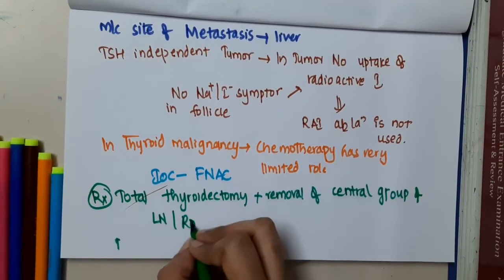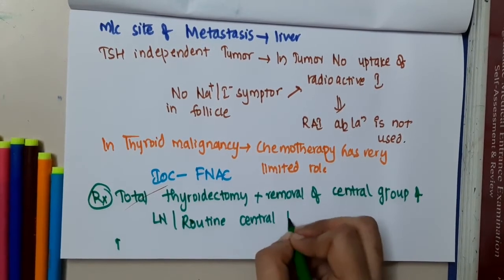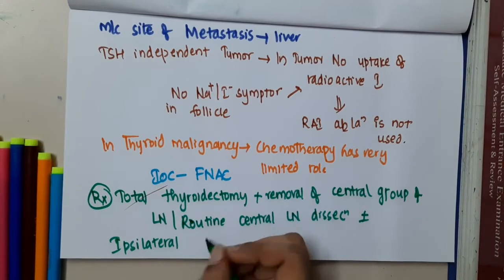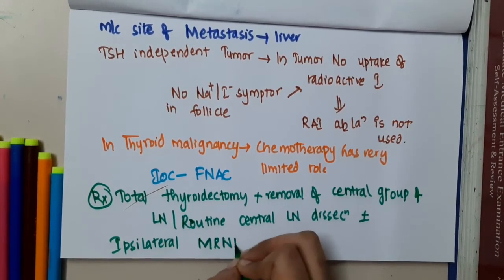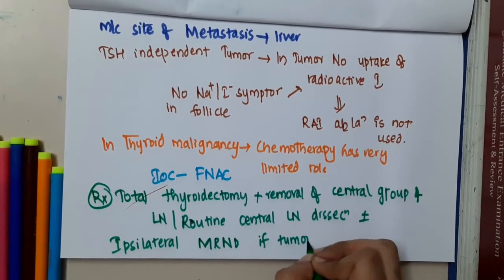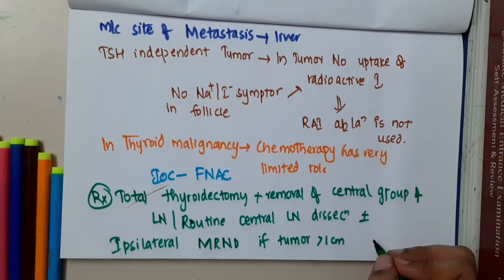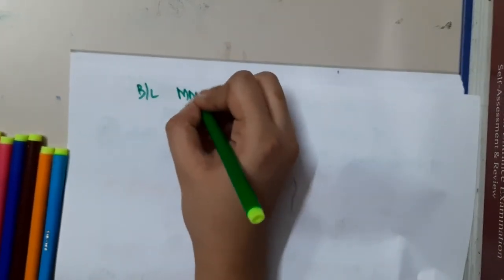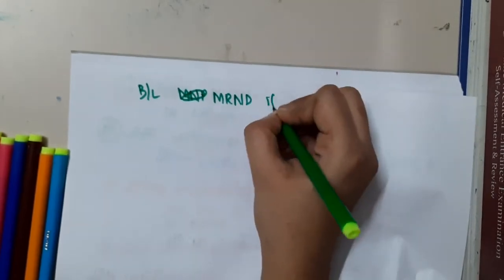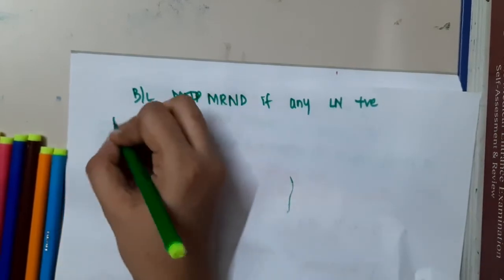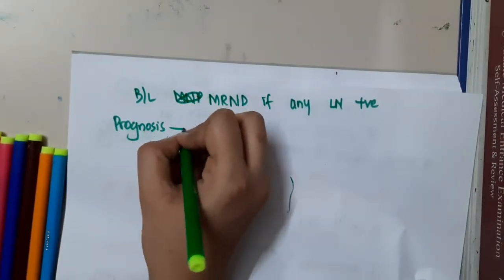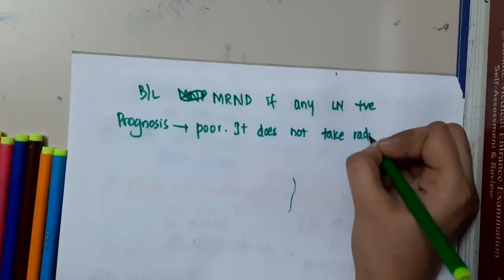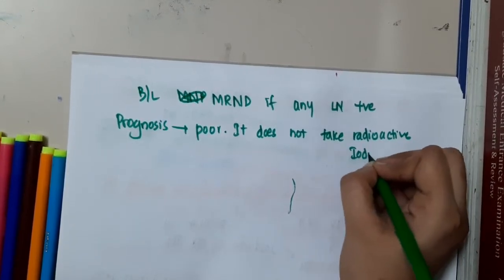Central lymph node dissection can be done, plus or minus ipsilateral modified radical neck dissection if the tumor is more than 1 cm. Bilateral modified radical neck dissection is also done if any lymph node is positive. The prognosis of medullary carcinoma is poor, and it does not take up radioactive iodine.